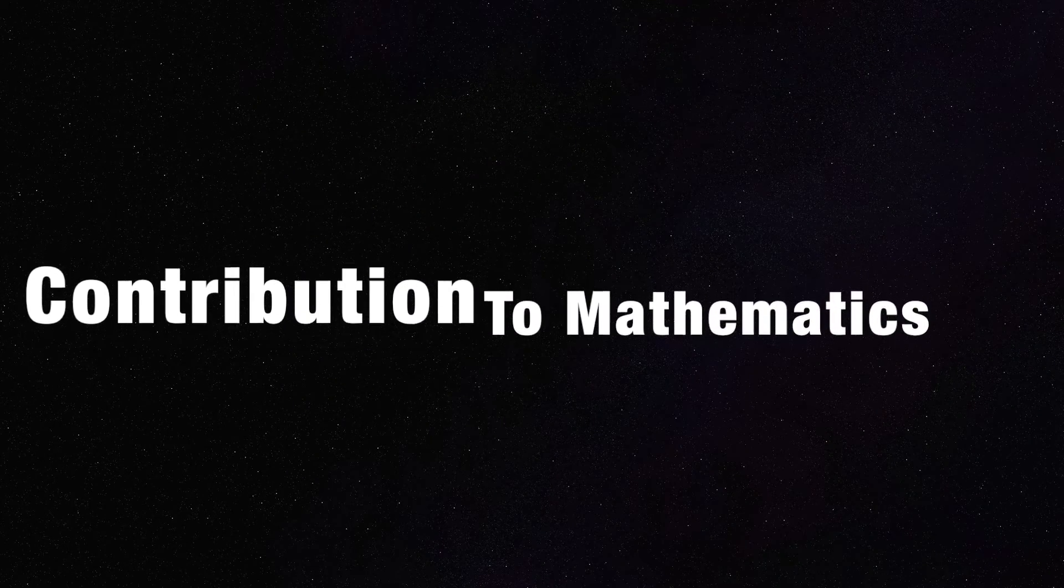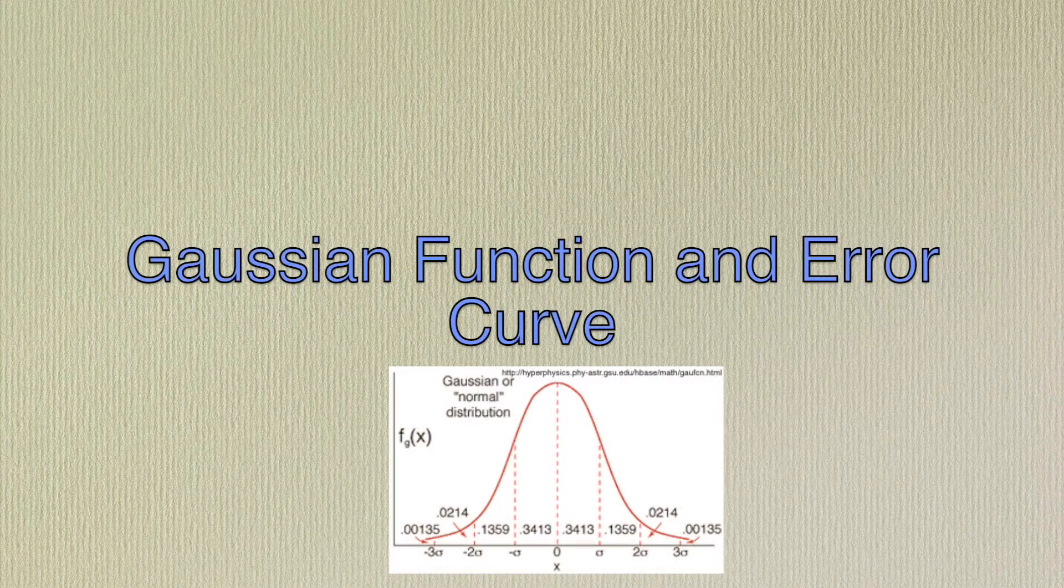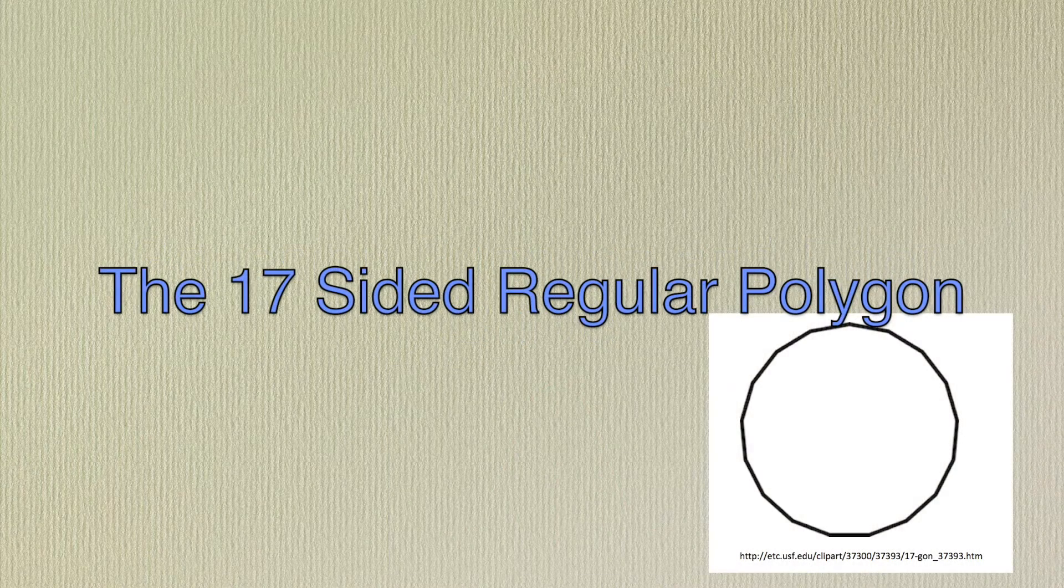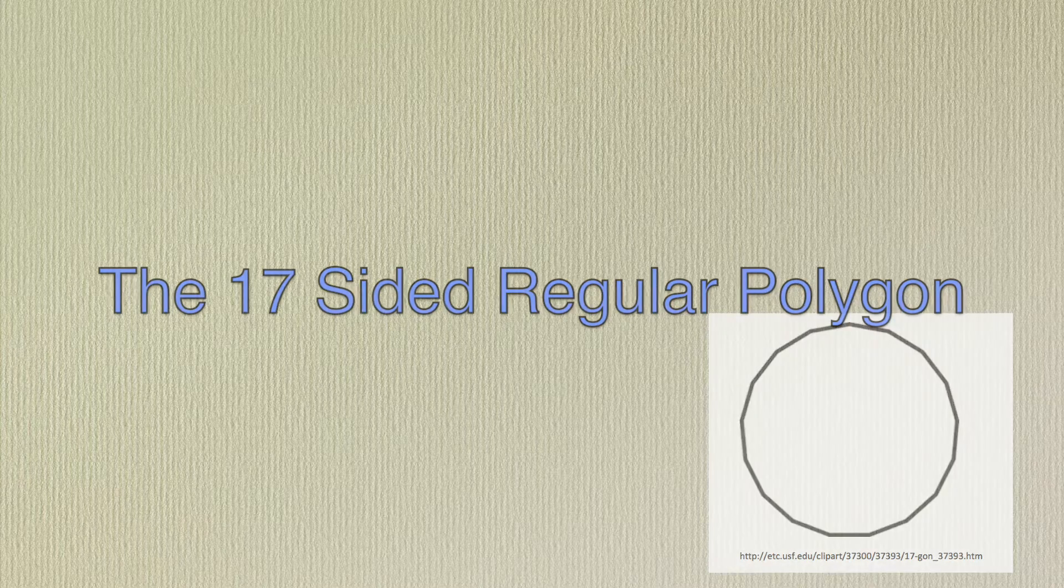Gauss made many remarkable contributions in the field of mathematics. These include a method of modular arithmetic, a Gaussian function and error curve known as Gaussian distribution, the discovery of how to draw a 17-sided regular polygon, where in his proof he directed other mathematicians to develop Galois theory.